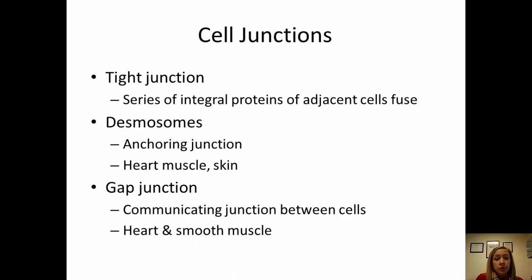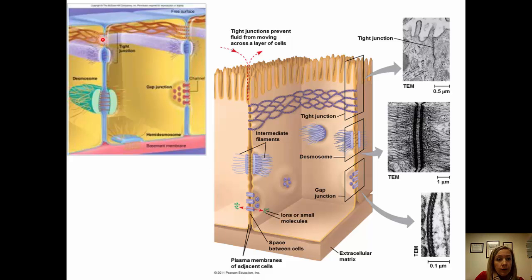Cells also communicate through different junctions. Tight junctions are a really tight connection between adjacent cells, allowing them to communicate very quickly. Desmosomes are also junctions but a little looser — they're known as anchoring junctions and look similar to a zipper. Gap junctions allow a tunnel between cells so that fluid can move quickly from one cell to the next. You'll see examples of these in different types of systems throughout anatomy.